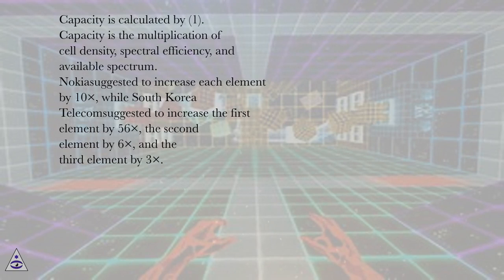Capacity is calculated by: Capacity is the multiplication of cell density, spectral efficiency, and available spectrum.